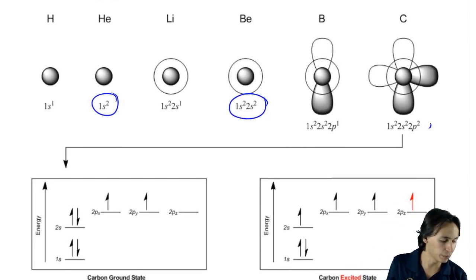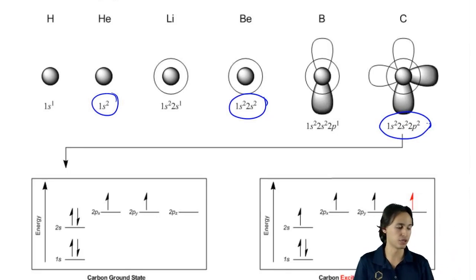And then with carbon, we only have two electrons in those p orbitals. Remember that there's three p orbitals total and we only have two electrons in them. By the way, the notation that I'm referring to here has to do with electron configuration which is something that you guys are supposed to remember from Gen Chem.